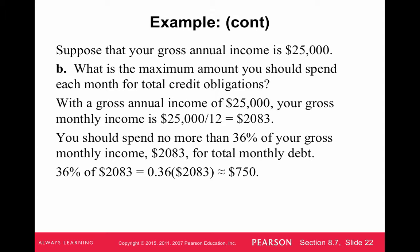For maximum total credit obligations, spend no more than 36% of your gross monthly income on total monthly debt, including mortgage, car payments, student loans, etc. Taking $25,000 divided by 12, then 36% of that monthly figure, gives a maximum of $750.